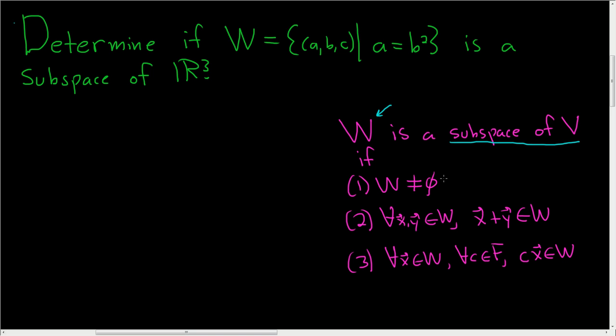There are three conditions. The first one says that our set W is not empty. The second one says that for all vectors X and Y in W, the sum is also in W. This is called closure under vector addition.